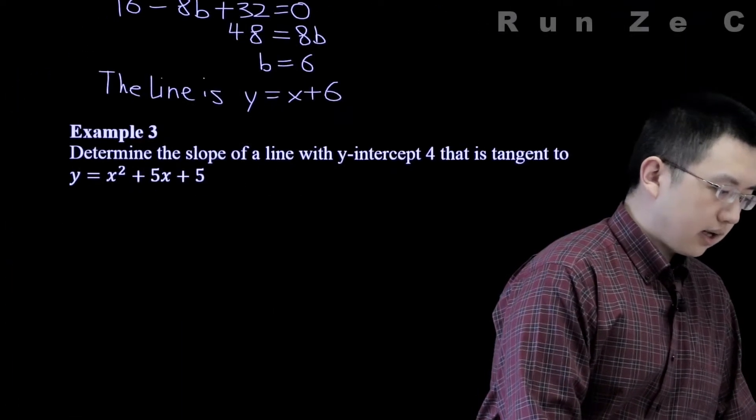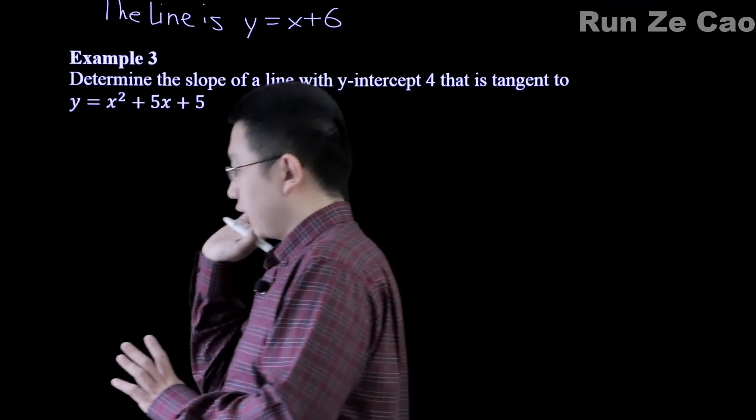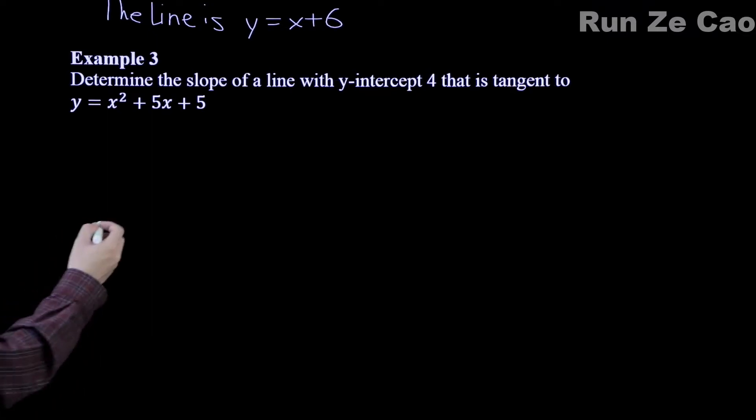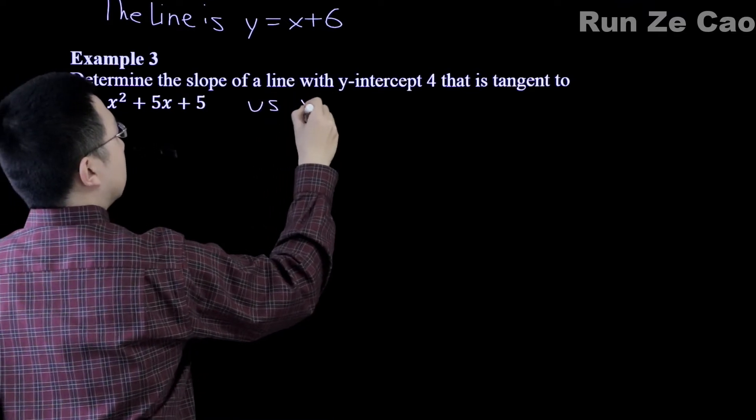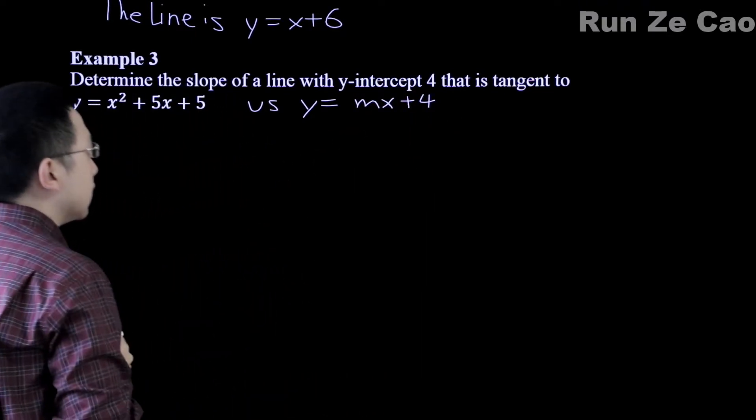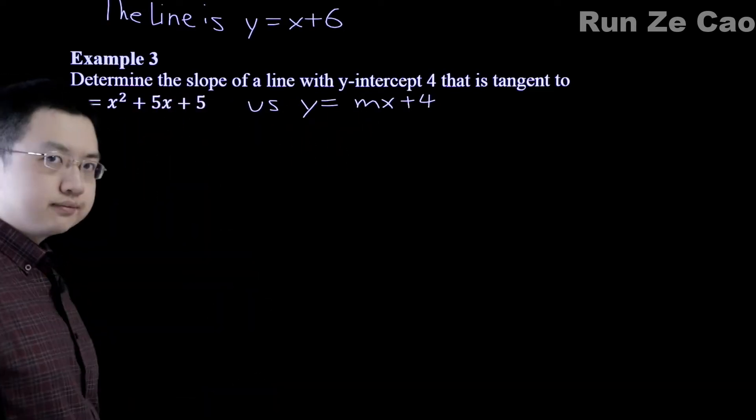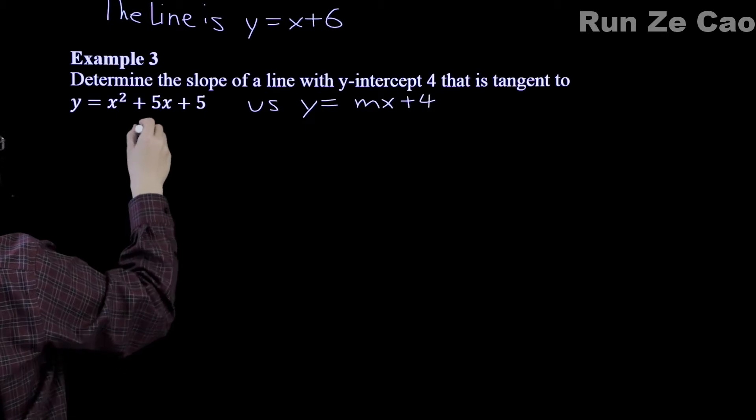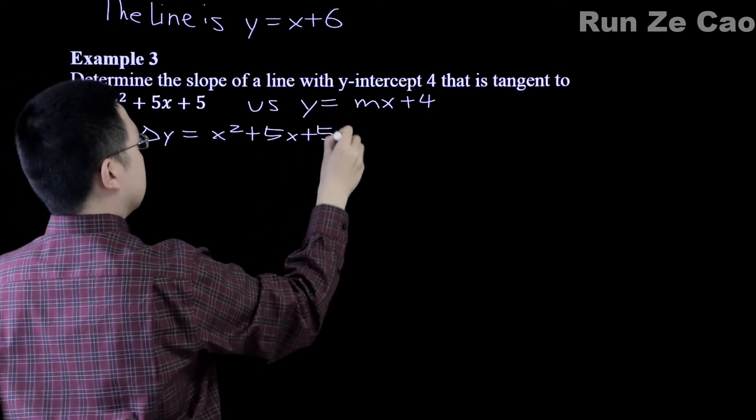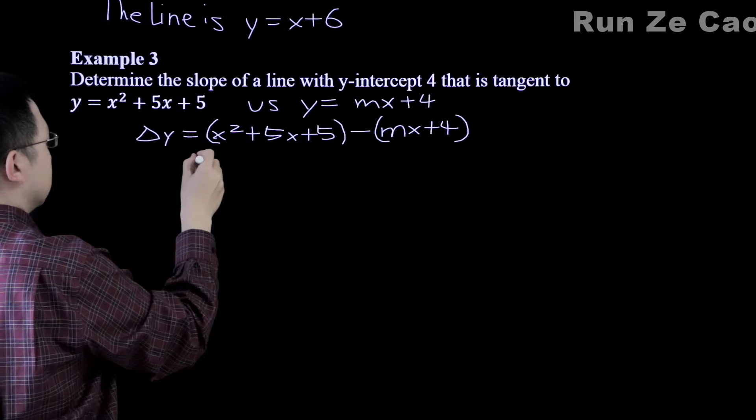All right, next example. Well, we didn't get a slope here but we did get an x-intercept. So in the case of y equals mx plus b, we have 2 versus y equals mx plus 4. What do we need? We need once again b squared minus 4ac equals 0 because we're looking for tangent. Therefore, delta y is equal to x squared plus 5x plus 5 minus this line.